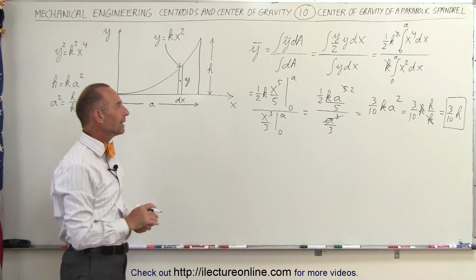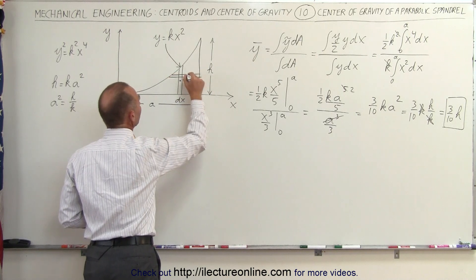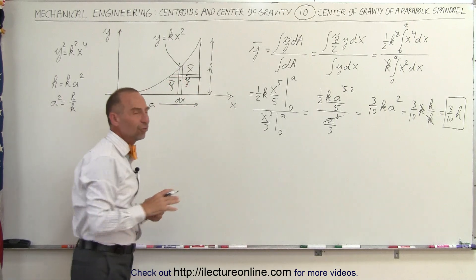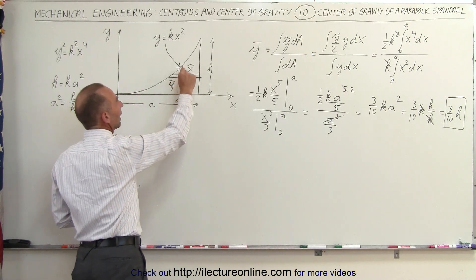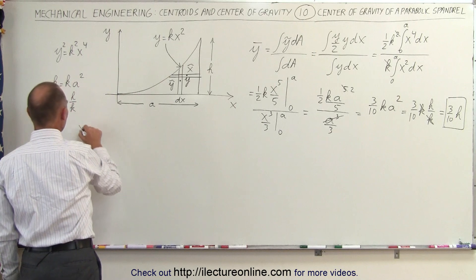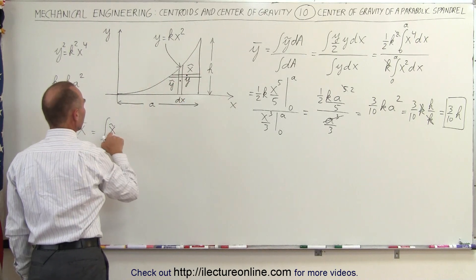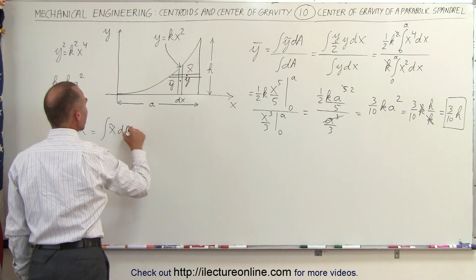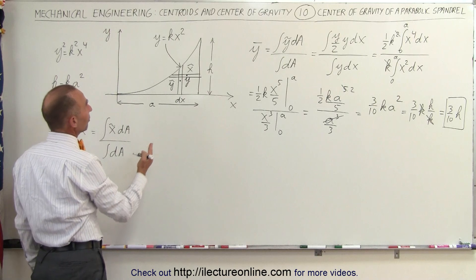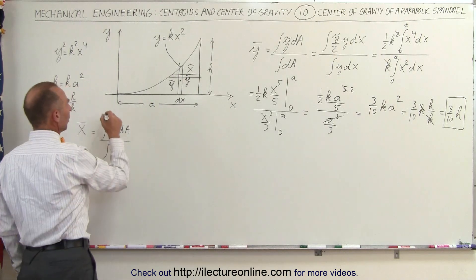Now let's find the same thing for the x coordinate. For the x coordinate we need a little slice oriented horizontally. There's our little slice, and that would be the center of mass. We'll call that x-tilde, and the y coordinate of the strip center is y-tilde. That is the x and y coordinate of the center of mass of each of these little strips. Now we're going to find the center of mass in the x direction, equal to the integral of the x coordinate of the center of mass of the little piece times dA, divided by the integral of dA.